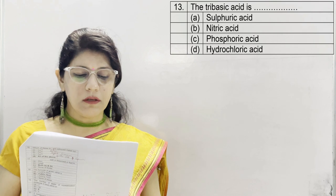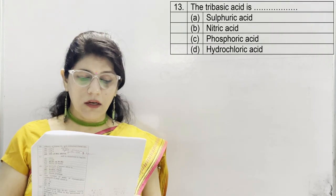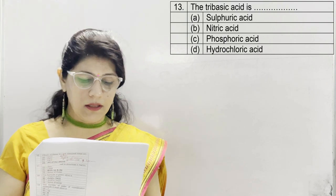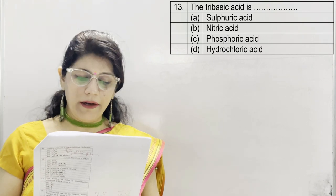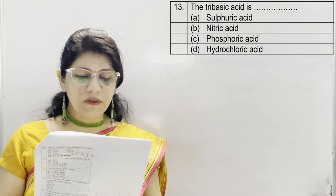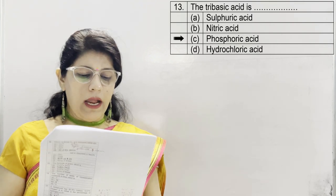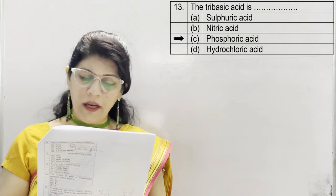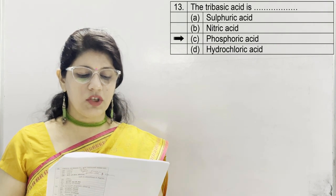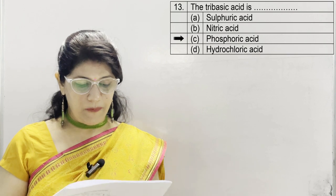In question 13, the tribasic acid is: A sulfuric acid — which is dibasic; B nitric acid — monobasic; C phosphoric acid — tribasic; D hydrochloric acid — monobasic. So correct option is C, phosphoric acid, which is a tribasic acid.